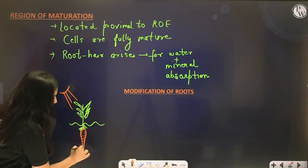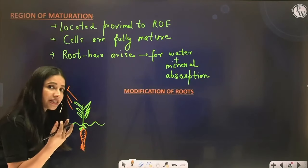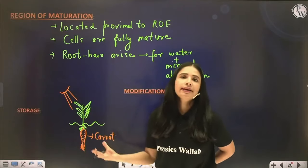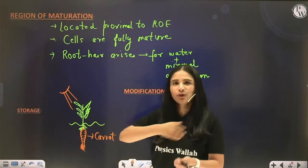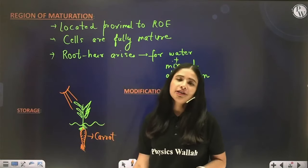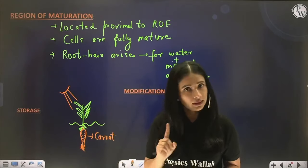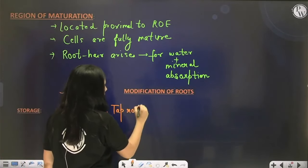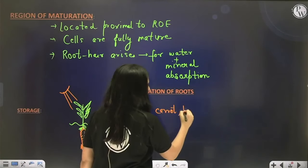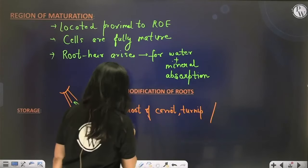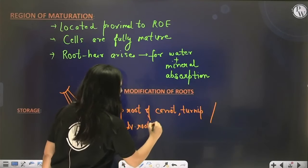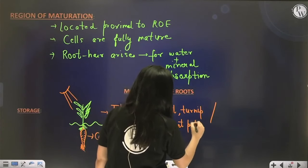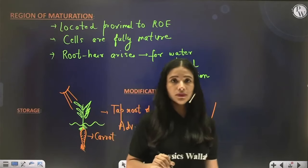The roots become fleshy and modify to form structures like carrot, radish, turnip, sweet potato — and we pull out the plant, remove the shoot system, clean the carrot, and enjoy it. So carrot is actually a modified root. The first modification of root is storage — tap roots of carrot, turnip, radish, and adventitious roots of sweet potato store food.